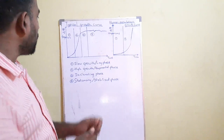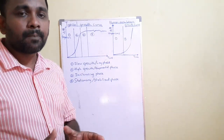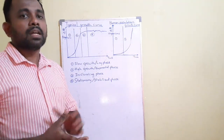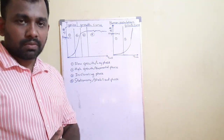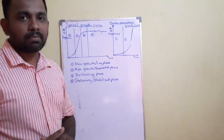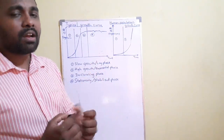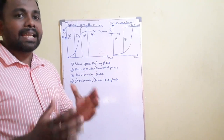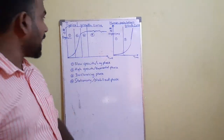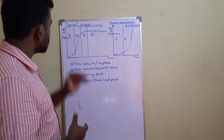In the exponential growth phase, there is a sufficient number of reproductively capable, matured individuals, and they are well adapted to the environment. They can extract more food and more water from the environment, allowing them to maintain a high reproductive rate and a high growth rate.